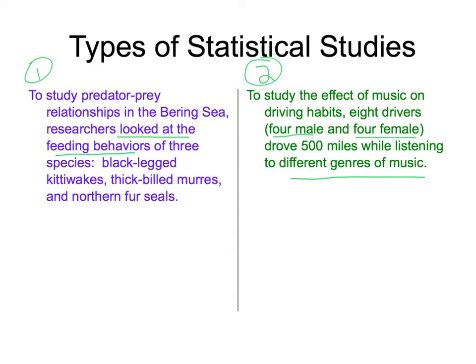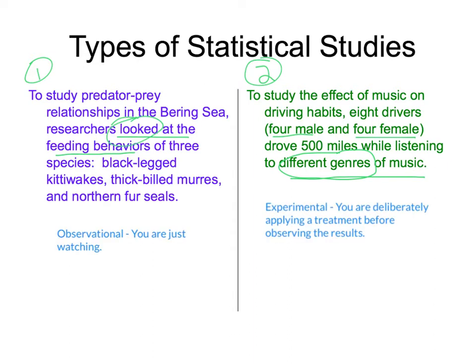Comparing the two: on the left side we're looking at behaviors — we're observing, not changing anything, just watching their feeding behaviors. On the right side it's experimental because you are deliberately applying a treatment before observing results. The treatment is having them listen to different genres of music and studying the effects on their driving habits.